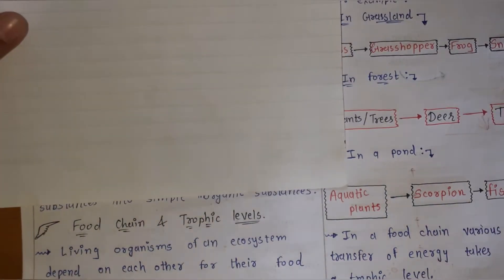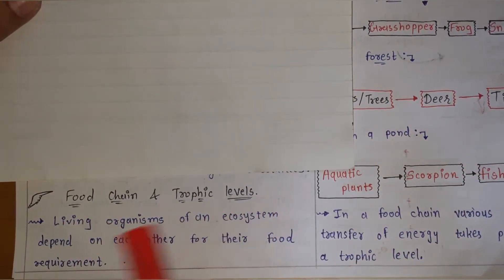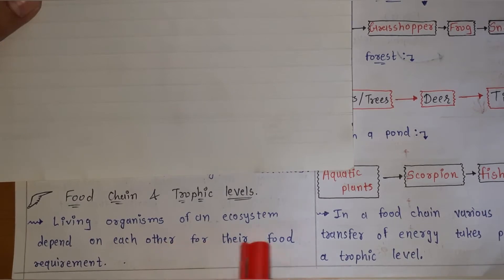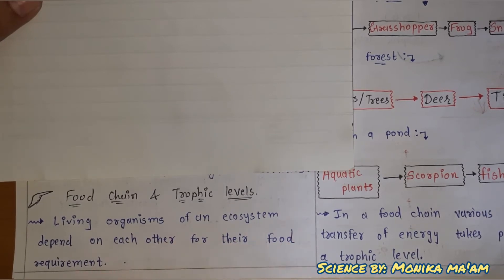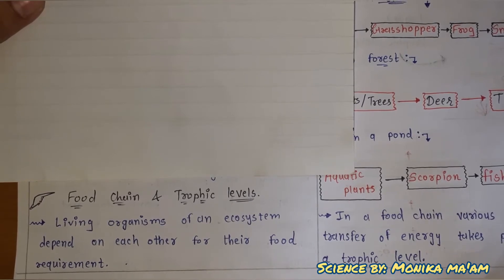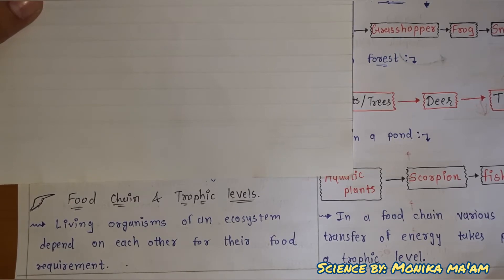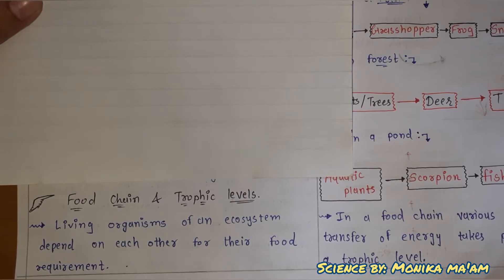What is a food chain? Living organisms of an ecosystem depend on each other for their food requirements. The ecosystem consists of living and non-living organisms. One living organism serves as a food requirement for another organism — one eats another to complete its food requirement. This is a food chain.